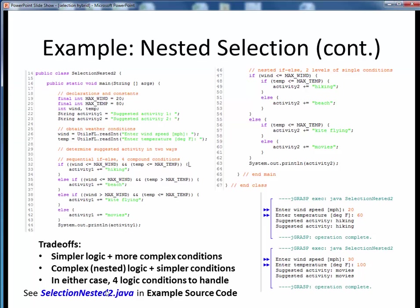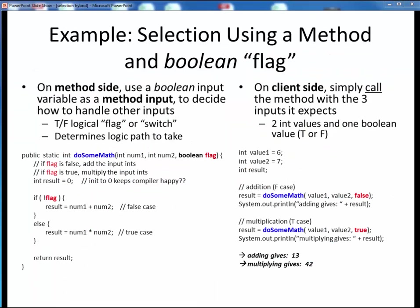To see this code execute, please finish by viewing the short code walkthrough video, SelectionNested2.java, which you'll find in the usual place. Open up this file in JGRASP to follow along. Here's another example of using selection, this time using a method and an input Boolean logical flag to decide what action to take internally.